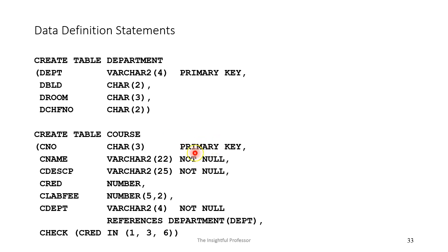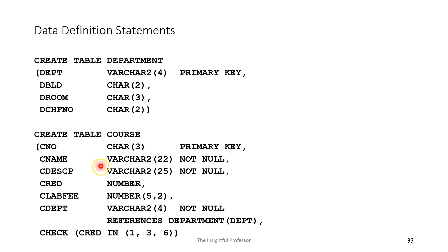Likewise, the course table has a primary key which is atomic — again a single column. Each row in the course table identifies a single course offered at this particular school. CNO, the course number, is the primary key. We have the name of the course, and we say that's required — not null. The description — every course must have a description — is also not null. These are also character types, but notice the difference: CNO is fixed length, while Cname and Cdescription are variable length.